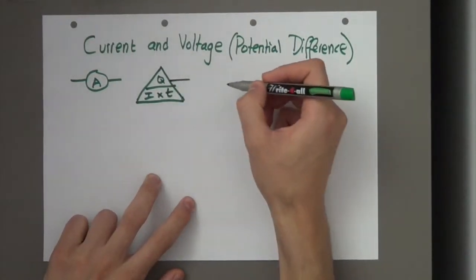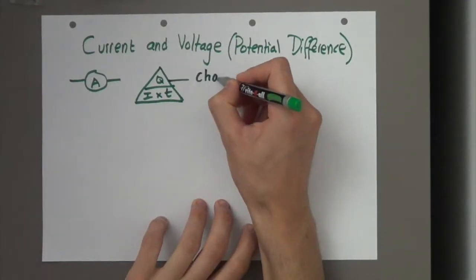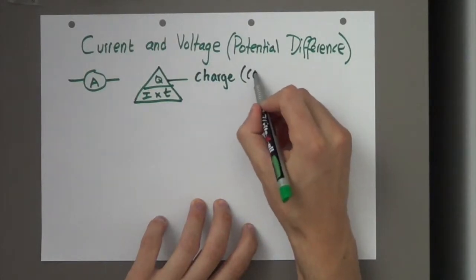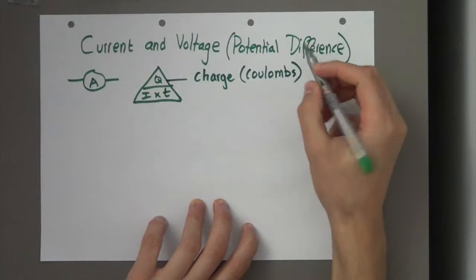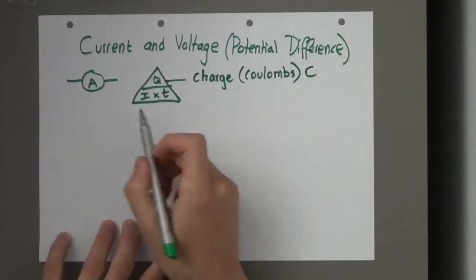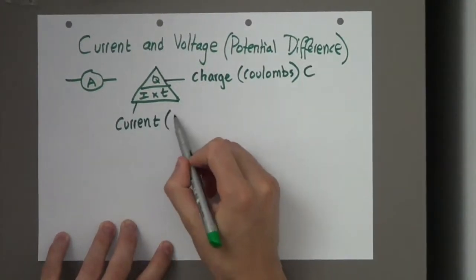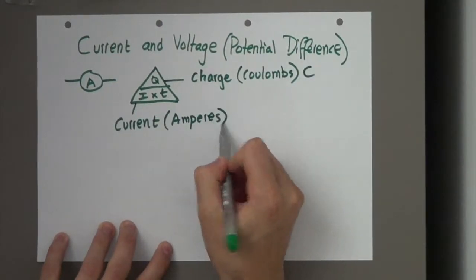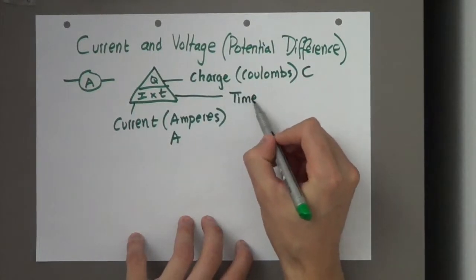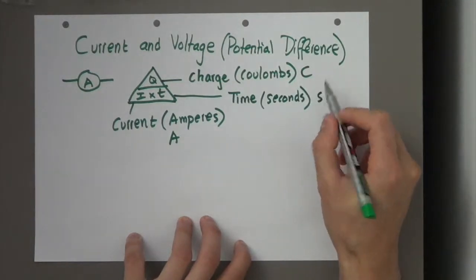So, I'm introducing to you this triangle or this equation. Q stands for charge. In this case, it will be the electrons passing through a point, and its units are Coulombs, and we denote Coulombs with a C. I stands for current, and its units are amperes, denoted by A. T stands for time, and units are seconds, denoted by S.